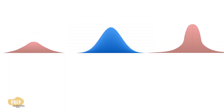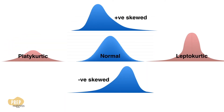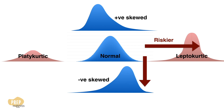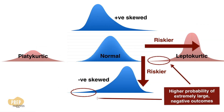The understanding of skewness and kurtosis is critical in risk management. Research has shown that most securities returns tend to exhibit skewness and kurtosis. In general, greater positive kurtosis and more negative skewness indicates increased risk, because of the fatter left tail — which indicates a higher probability of extremely large negative outcomes.